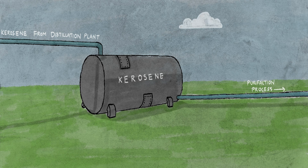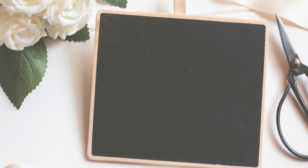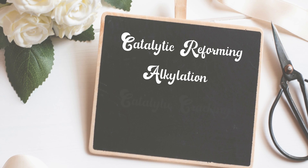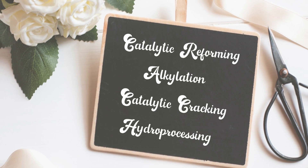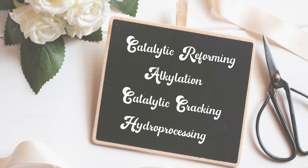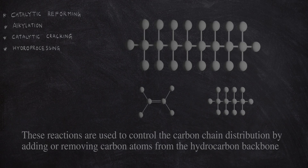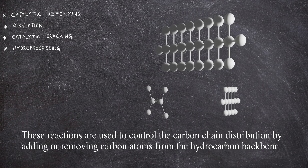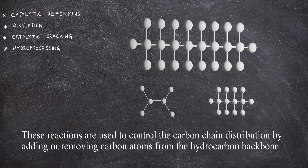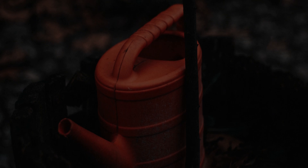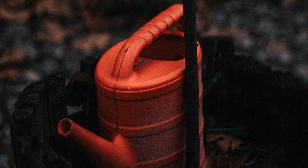Once the oil has been distilled into fractions, further processing in a series of chemical reactions is necessary to create kerosene. Catalytic reforming, alkylation, catalytic cracking, and hydro-processing are four of the major processing techniques used in conversion of kerosene. These reaction processes involve transferring the crude oil fraction into a separate vessel where it is chemically converted into kerosene.